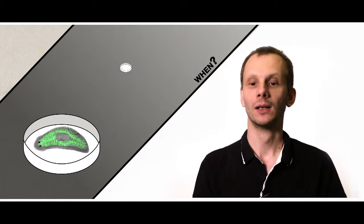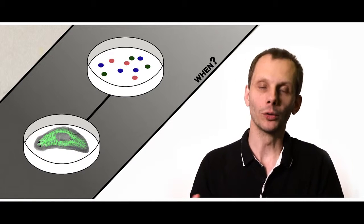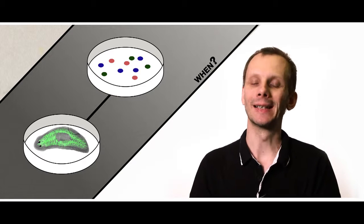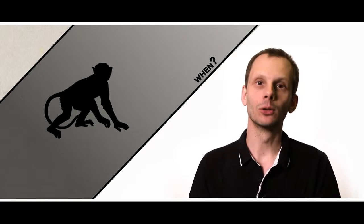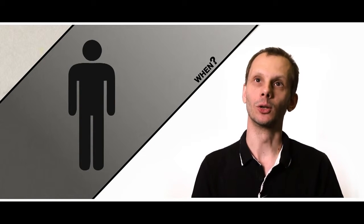First, we have to go from the planaria worm to cell cultures. We've started. We know how to do it. Next, we have to go to a much bigger model. Maybe mice, or even rabbits. Maybe primates. And finally, we'll get to humans.